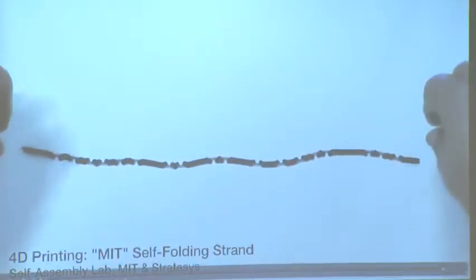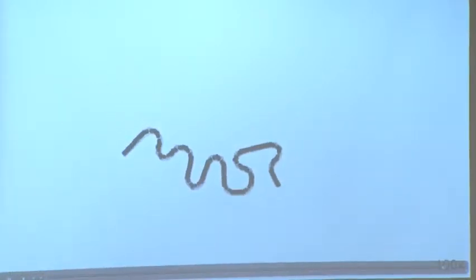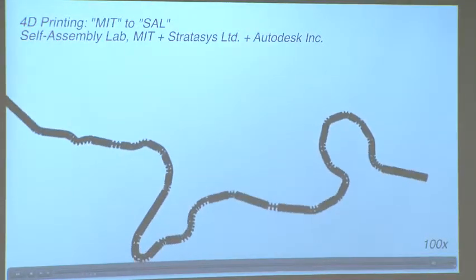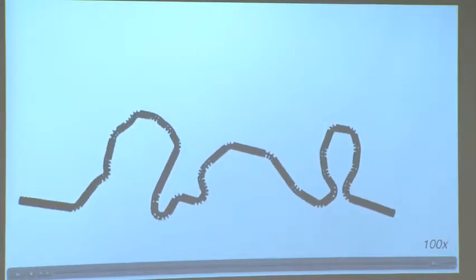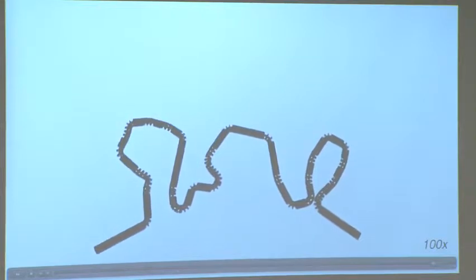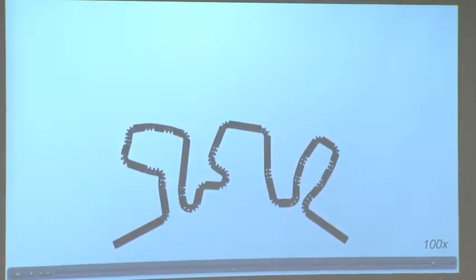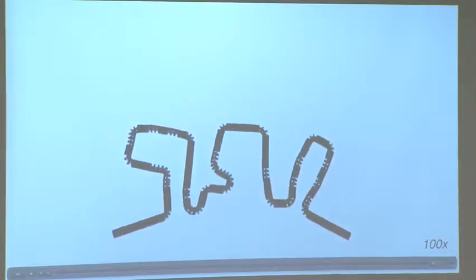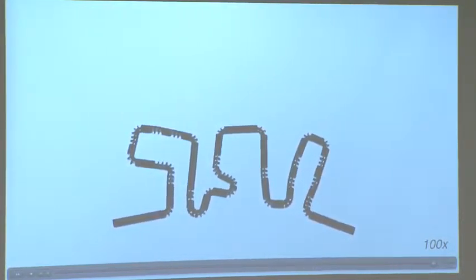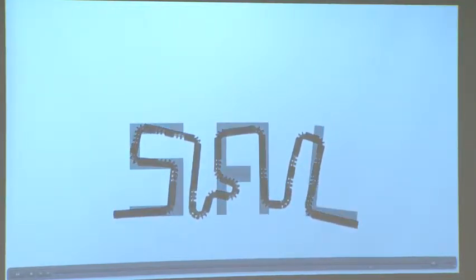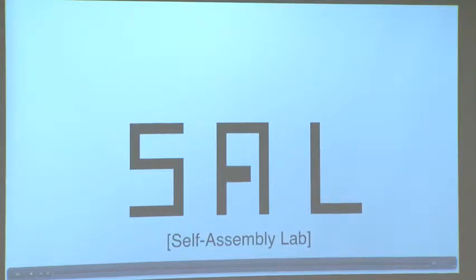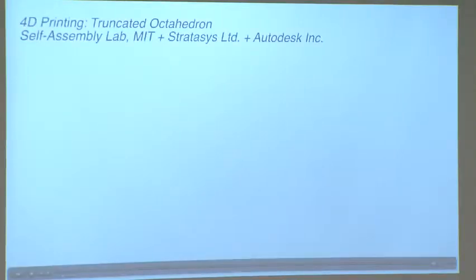One of the first examples we showed was this single strand when dipped in water transforms into the letters MIT. Some good advertising. And then we showed the letters MIT going from the 2D structure, transforming itself into another 2D structure. In this case, it's the letters S-A-L for the self-assembly lab, but it's a bit like abstract art, so you kind of have to squint. We'll help you in a second, I'll show you. So, we showed here that we can go from any 2D to any other 2D shape.